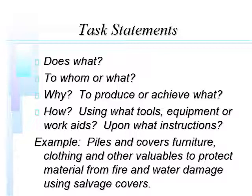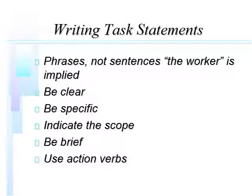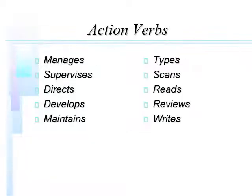Task statements should be brief phrases or bullet points — not full sentences. The worker is implied, so we never have to include them. Statements need to be clear, specific, indicate scope, and use action verbs. If you find yourself writing a paragraph, you're probably writing a series of tasks, not a single one — break them up. Each task should have a clear single action verb, then we can ask: to what, why, what are the outcomes, what tools. Action verbs include: manage, supervise, direct, develop, maintain, type, scan, read, review, write. If there is no action verb, you're not describing an observable behavior.